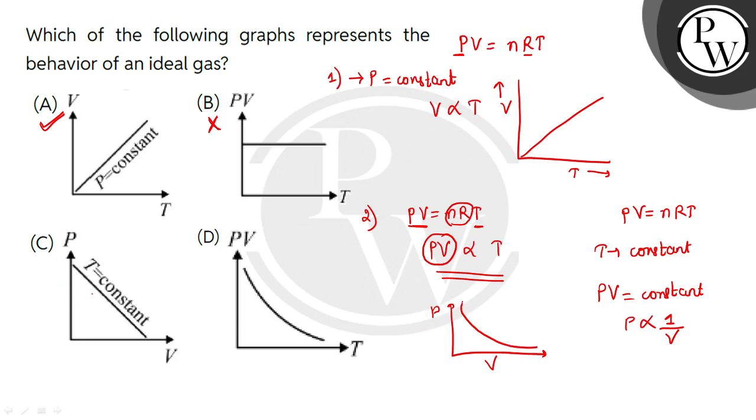At constant temperature, the P versus V graph should be a hyperbola, not a straight line. That's why option C is also incorrect.